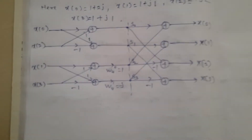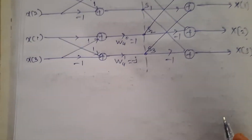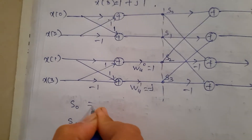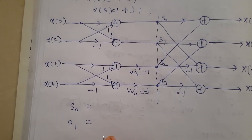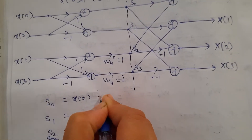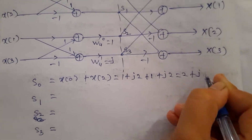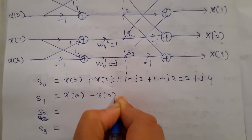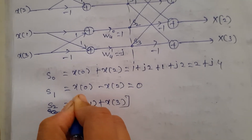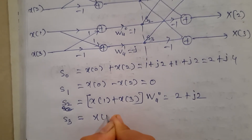From the signal flow graph, we find s0, s1, s2, and s3. s0 = x(0) + x(2) = (1 + 2j) + (1 + 2j) = 2 + 4j. s1 = x(0) - x(2) = 0. s2 = x(1) + x(3) = 2 + 2j. s3 multiplied by W4 gives the result with appropriate sign change, giving j2.